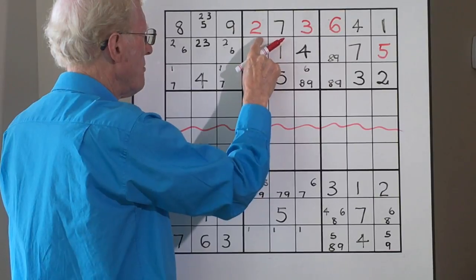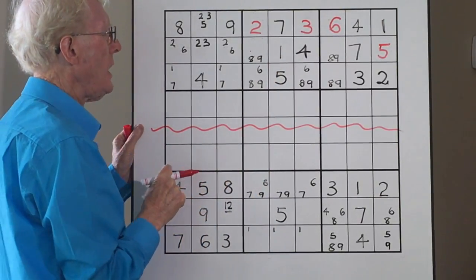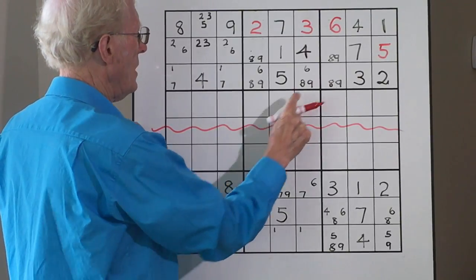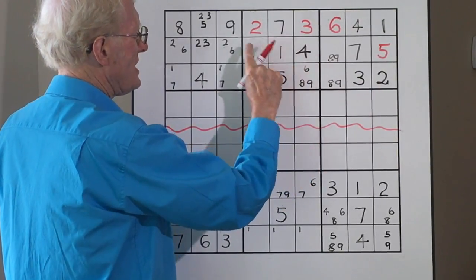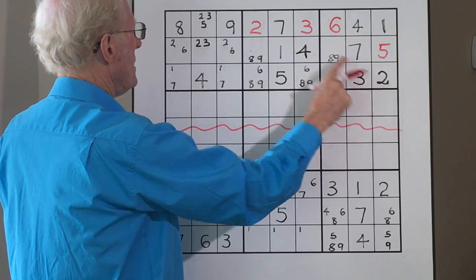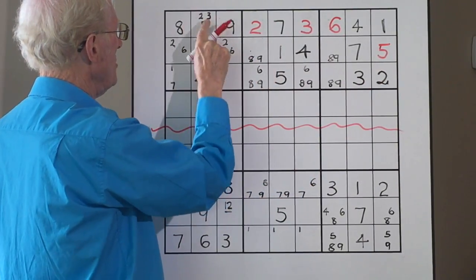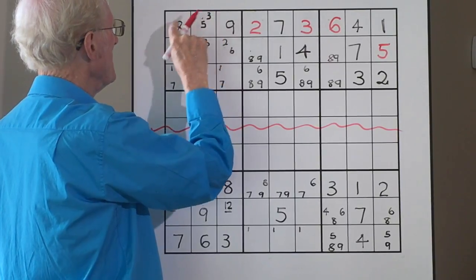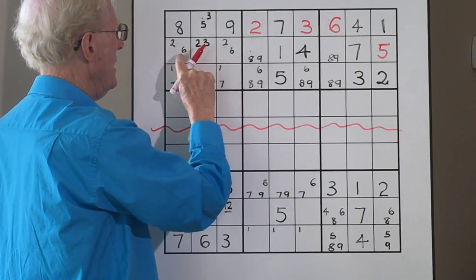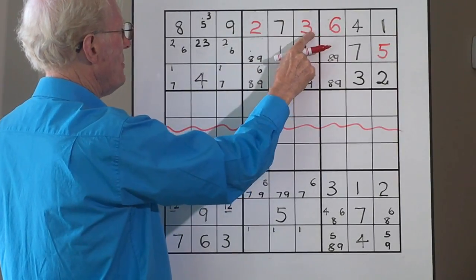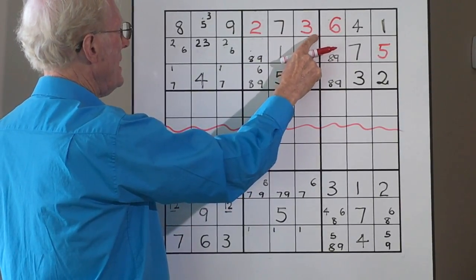That six also means that this can go, and that three also means that this three can go. So this becomes a two. If that's a two and a three in that block, we can get rid of this two and we can get rid of that three. Now let's see if there are ramifications from those. Well, bottom, let's take the two—bottom, top, middle. We know there can't be a two here, so we can get rid of that two.